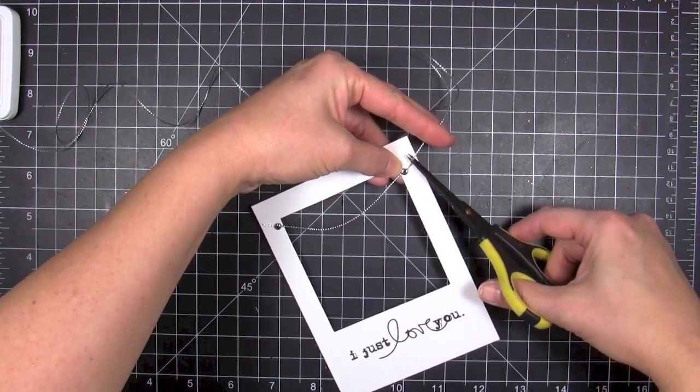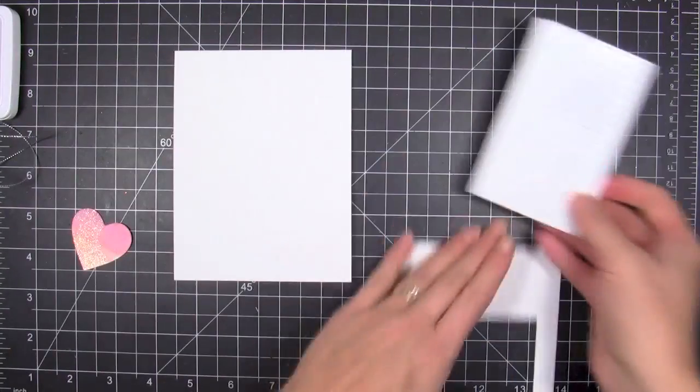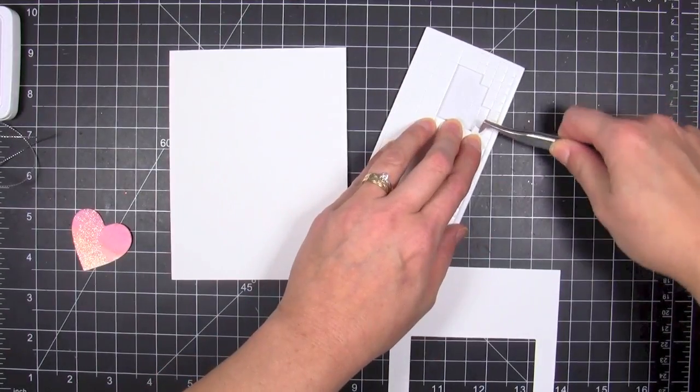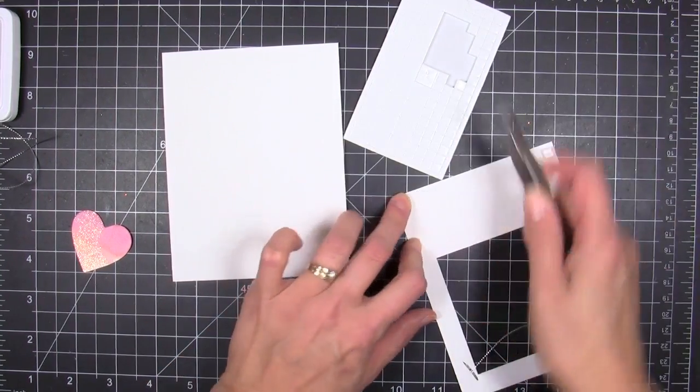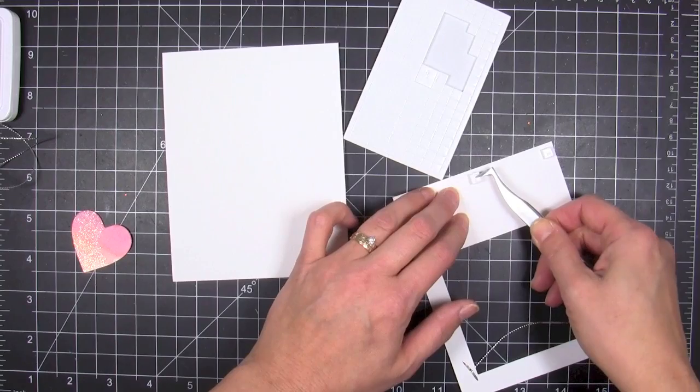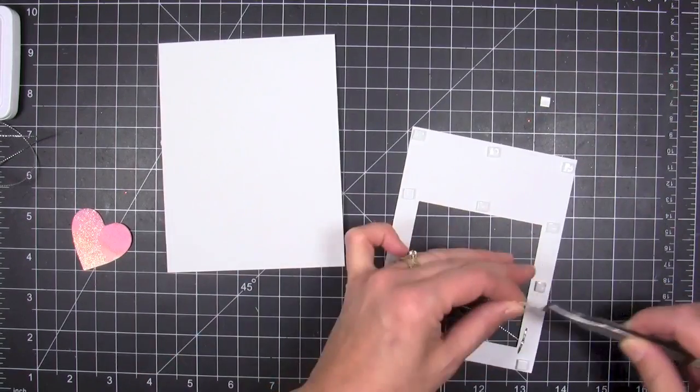I'll just trim off the ends and then I'm ready to 3D mount that to my card front. I wanted to have it 3D mounted because the clip and the heart when they're hanging they're gonna be a little bit bulky, so I wanted my frame to have some depth to it.